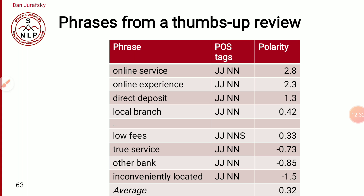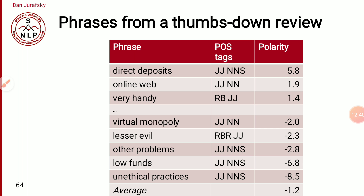Finding the average polarity of all phrases in a thumbs-up review gives an overall score of 0.32, which is assigned as positive. Similarly, from thumbs-down (negative) reviews, phrases like 'direct deposit' had polarity 5.8, and 'online wave' had polarity 1.9. Negative phrases like 'virtual monopoly,' 'lesser evil,' 'other problems,' and 'low fund' had negative polarity, giving an average of −1.2, assigned as negative.